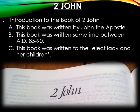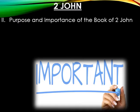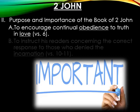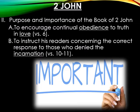This book was written to the elect lady and her children. There is disagreement concerning whether this refers to a literal woman and her children, or figuratively to a church and its members. John wrote this for two primary reasons: first, to encourage continual obedience to the truth in love, and secondly, to instruct his readers concerning the correct response to those who denied the Incarnation.